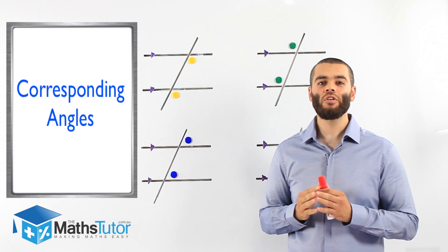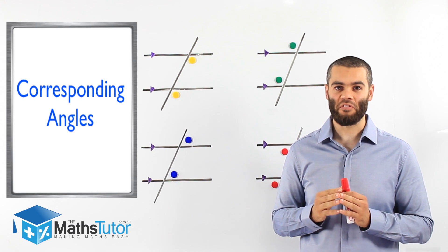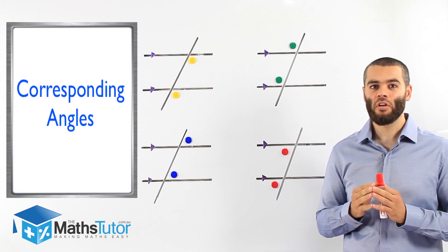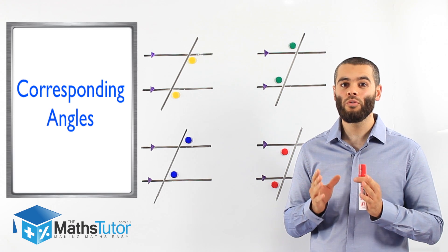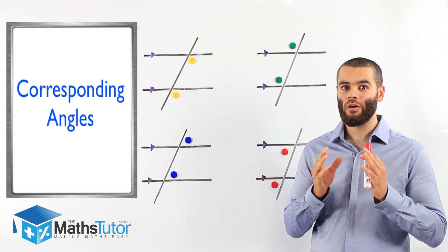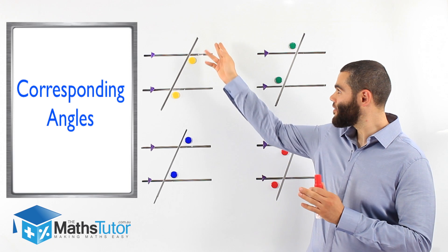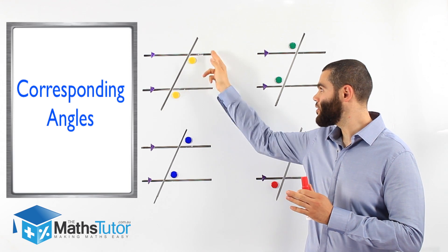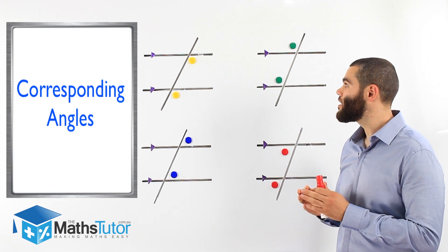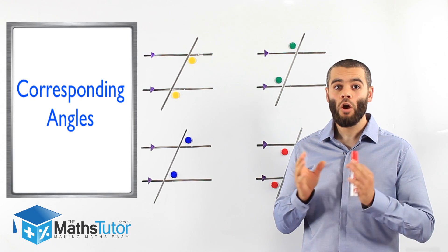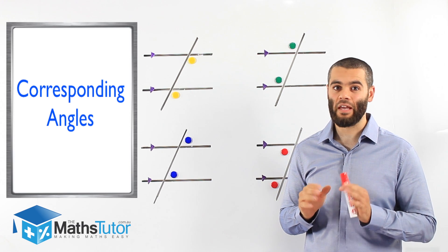Hey guys, I'm going to show you today how to locate and identify what we call corresponding angles. Like alternate angles, corresponding angles are created when a transversal cuts through parallel lines. We know from previous lessons that a transversal is the line that cuts through parallel lines and creates several angles, and some of these angles have special relationships. One of the relationships we're going to be looking at today is the corresponding angle relationship.